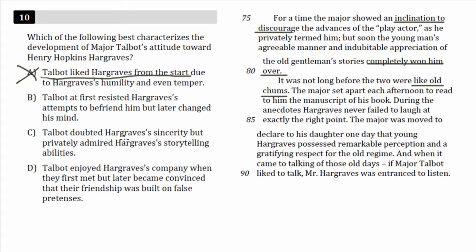Choice C: 'Talbot doubted Hargraves' sincerity' — his honesty, his ability to tell the truth. It doesn't say anything about Major Talbot being skeptical of Hargraves' honesty. You might think, 'oh, maybe he wasn't a fan because Hargraves was dishonest,' but the passage doesn't say that. It doesn't say anywhere that Talbot had any doubts about Hargraves' sincerity. And 'but privately admired Hargraves' storytelling abilities' is wrong too. Any error makes the whole choice wrong. So C is wrong.